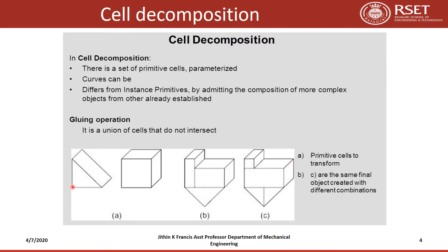Cell decomposition uses a gluing operation — a union of cells that do not intersect. In figure A, two basic primitives are given; figures B and C show final objects created with different combinations. This gluing operation restricts cells to be non-intersecting, meaning adjoining cells may touch each other but do not share any interior points. By joining simple cells using the glue operator, complex solids can be easily modeled.